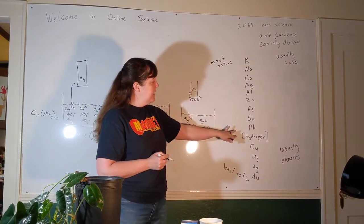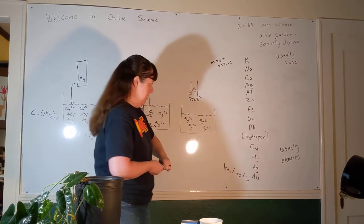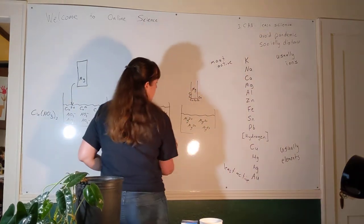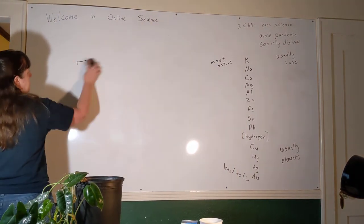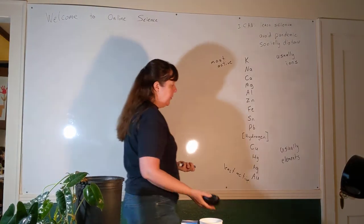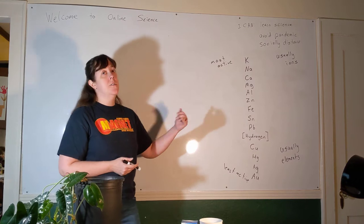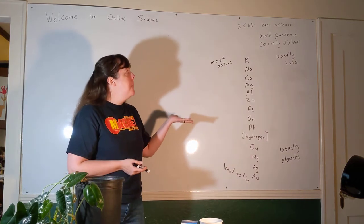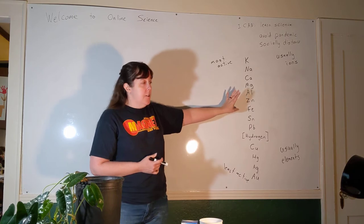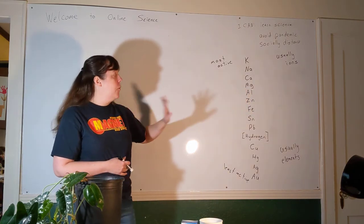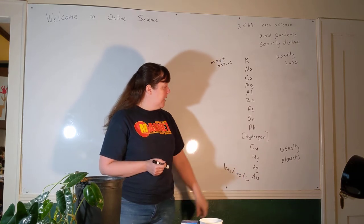Hydrogen is shown in brackets in the activity series — this is where acid would be. Elements above hydrogen should have reacted with acid in activity four, and elements below it should not have. The elements at the bottom of the list are sometimes called the coinage metals: copper, silver, and gold. People make money from these metals partly because they're so unreactive. Some elements higher on the list react with pure water or acid, and you wouldn't want your coins to dissolve if you spilled vinegar on them.